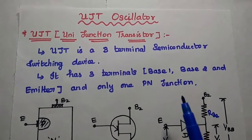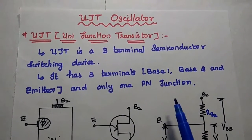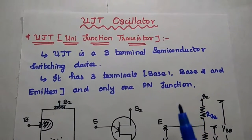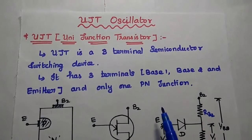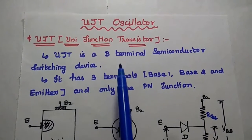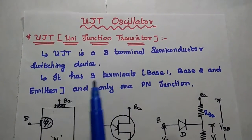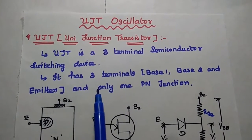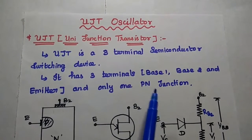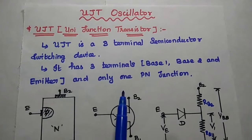Dear students, now we are going to discuss UJT oscillator and its operation in detail. Let's start with the definition of UJT. UJT means unijunction transistor. It is a three terminal semiconductor switching device. It has three terminals: base 1, base 2, and emitter, and only one PN junction.